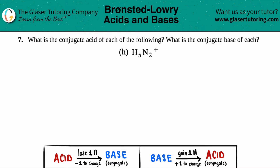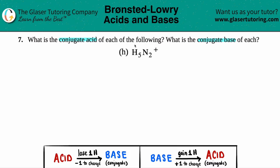Number 7. What is the conjugate acid of each of the following? And then what's the conjugate base of each? We have letter H. So in this case, we just have to find the conjugate acid and the conjugate base of H5N2+.